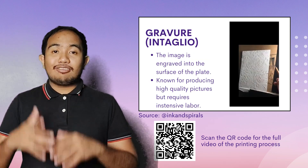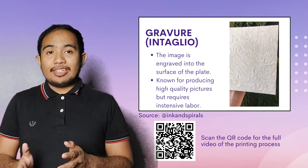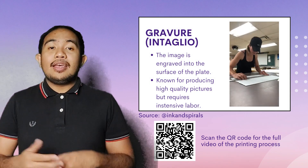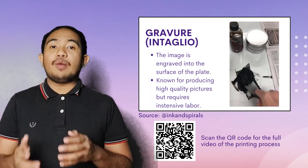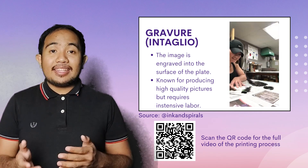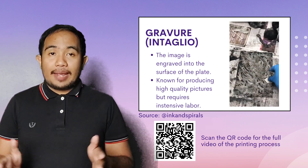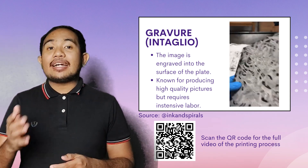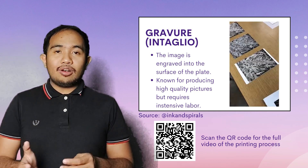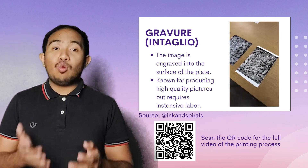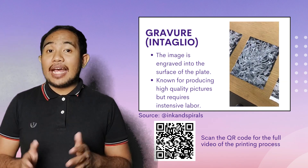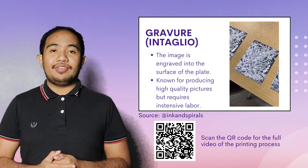The next one is gravure printing. Gravure printing, also known as intaglio, involves engraving the image into a plate surface. The ink is applied to the plate and then wiped, leaving ink only in the cut-out areas. Gravure is renowned for high-quality picture reproduction, but at the same time, it is labor-intensive.